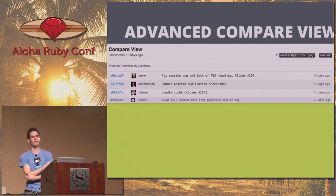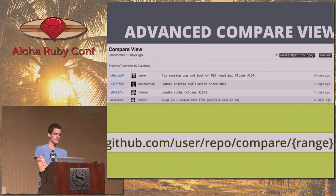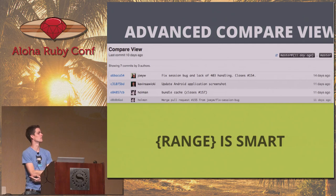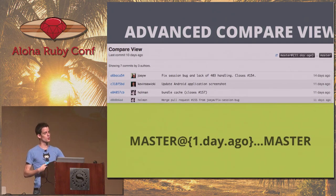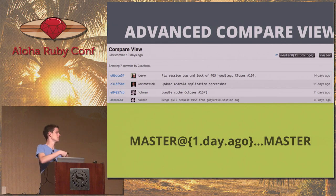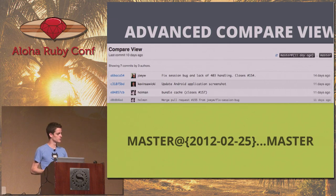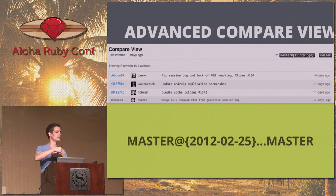The compare view: you get a URL like user/repo/compare and then a range, usually something like master...my-branch. The cool thing is that range is smart — this is strictly Git-based magic. You can do things like master@{1.day.ago}...master and you'll see the difference between what happened on master today versus a day ago. You can use 'yesterday' or a particular date. A lot of teams bookmark that page to see what's actually happening over time.